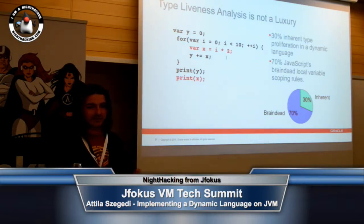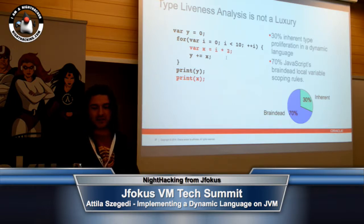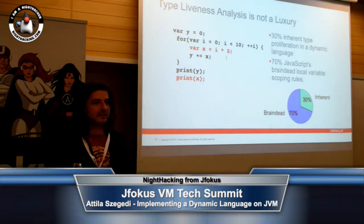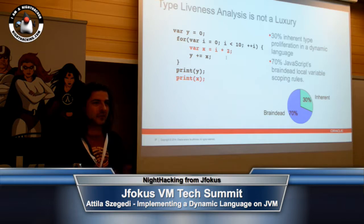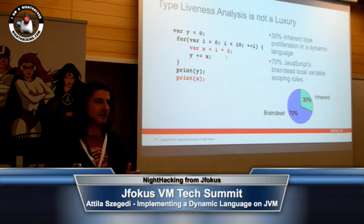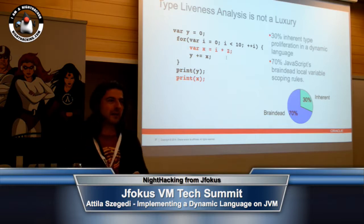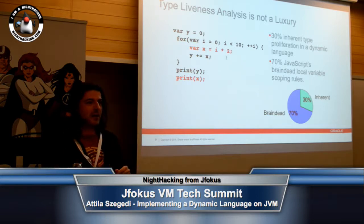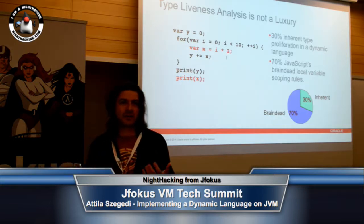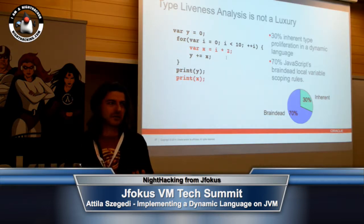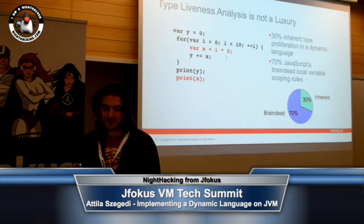I would like to think that like 30% of this problem is inherent in a dynamic language, or like 70% is actually JavaScript's brain-dead local variable scoping rules. Because if I declare a var inside of a loop body, then why is it still available and defined outside of the loop body? But that's how JavaScript rolls. JavaScript 6 has 'let' which actually has actual block scoping. In JavaScript, a var declaration is live for the full duration of the function.